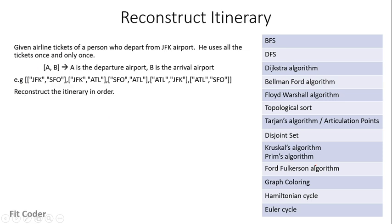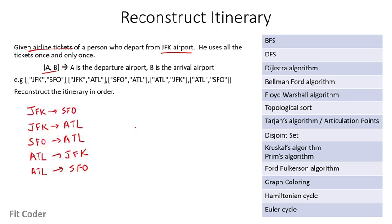The next problem is reconstruct itinerary. We are given airline tickets of a person who departs from JFK airport and uses all tickets only once. If we are given data in the form of A, B it means A is the departure airport and B is the arrival airport. We have to construct the order in which he will use these tickets.